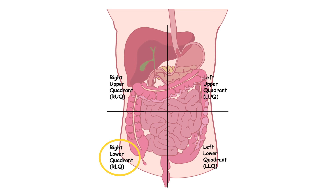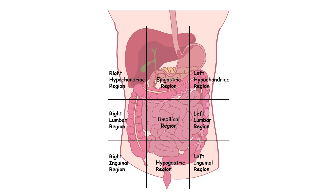The left lower quadrant, LLQ, contains the left ovary and fallopian tube in females, the left ureter, and portions of the intestines. These quadrants are especially useful in clinical settings — for example, RLQ pain might suggest appendicitis.